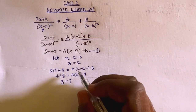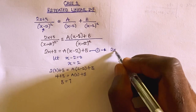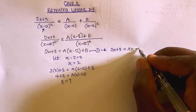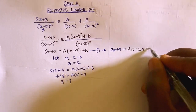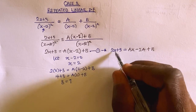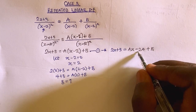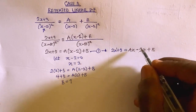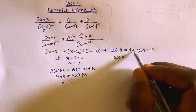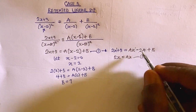Now let's go ahead to get the value of A by expanding equation 1. Expanding gives 2x plus 3 equals Ax minus 2A plus B. After that we need to compare coefficients. Comparing the highest power of x on both sides — the highest power is 1 on both sides — we compare the coefficient of x: 2x equals Ax.